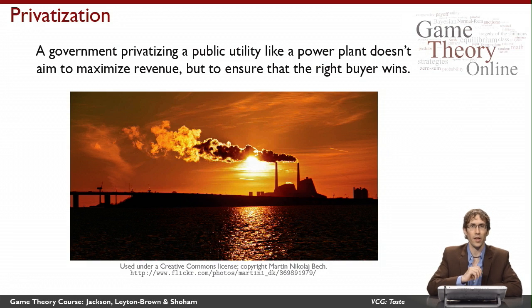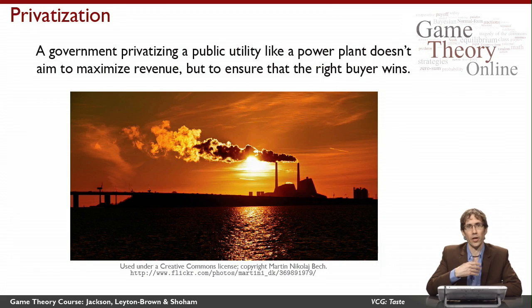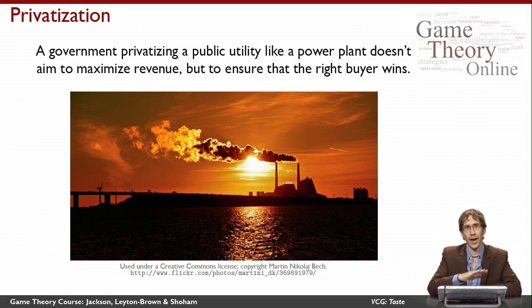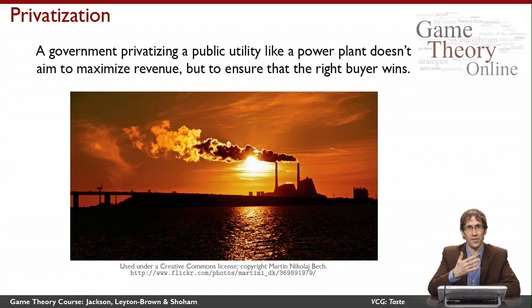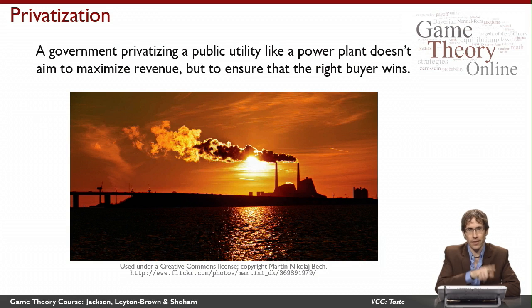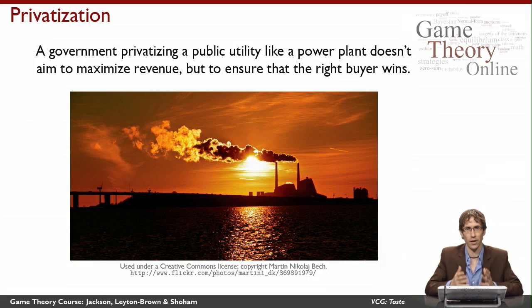So instead, the government has to sell the power plant, even if it doesn't care about collecting the money. The question is: what rules should it use for imposing payments on the different potential buyers? If we use the VCG mechanism here, it gives us a way of imposing payments on the buyers so that each buyer would simply tell the government the truth about how much the power plant is worth to them. This is a simple example because the outcome space is just giving the power plant to one of the potential buyers — we're allocating a single good. But VCG also works in other settings that look pretty different from this.